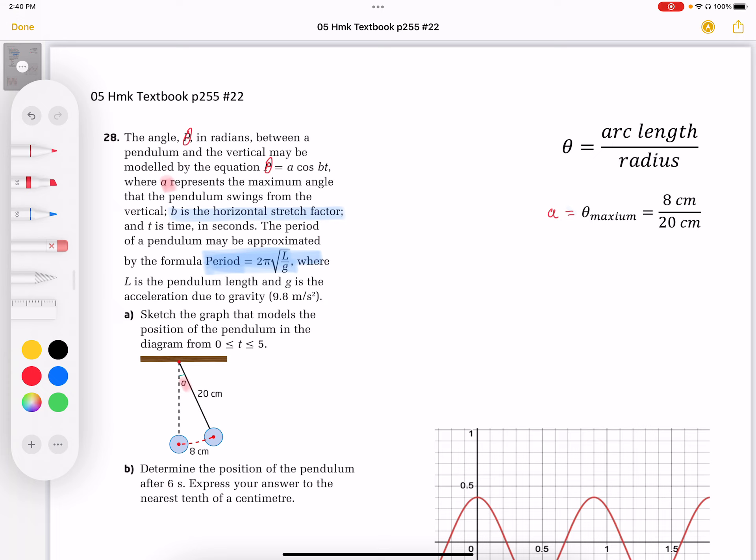A represents the maximum angle the pendulum swings from the vertical. So this is a starting position, and it's implied that this is a starting position. So that angle A here, this angle A between here and here,